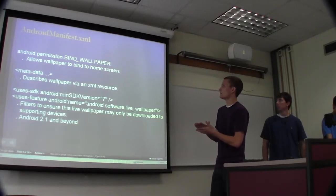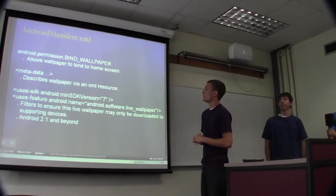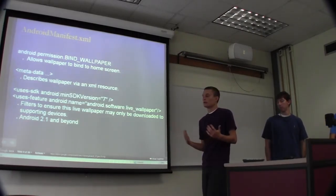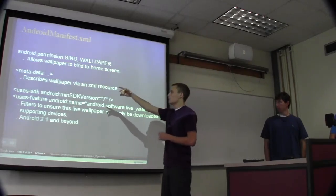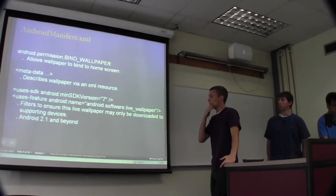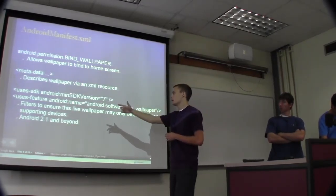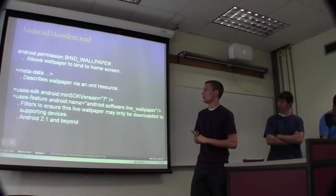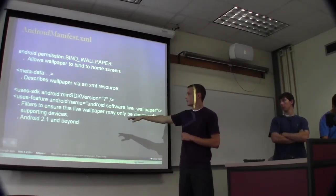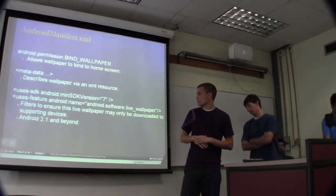Before I hand it over to Jeffeti, the last bit of implementation that I want to mention is what changes in the manifest for live wallpapers. Basically you just need to make sure you set the permission to bind wallpaper to make sure that your wallpaper actually can bind to the home screen. And also we have this new metadata tag. This is just used to describe the wallpaper via an XML resource, just detailing details about the wallpaper. We also have the uses SDK and uses feature tags which we talked about last week in lecture, just to make sure that the appropriate filters are applied in the Android market. Live wallpapers are only implemented for or only available on Android 2.1 and beyond. So that's API level 7.